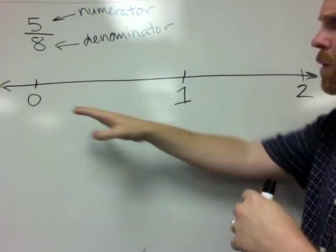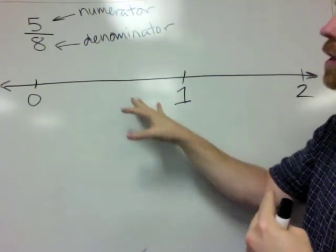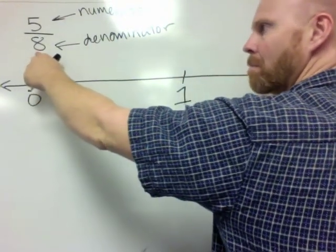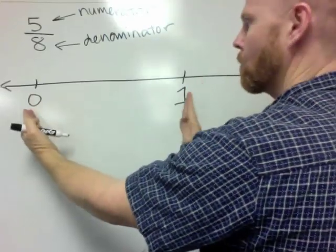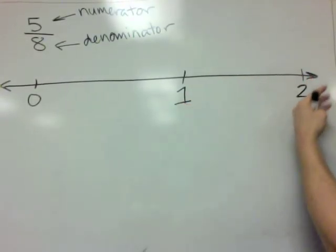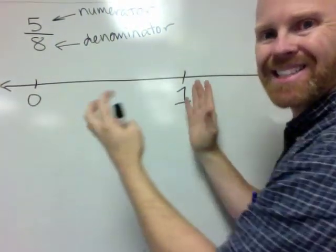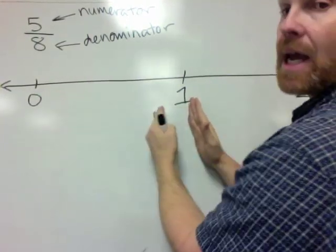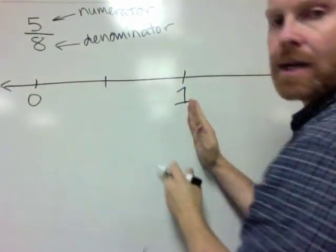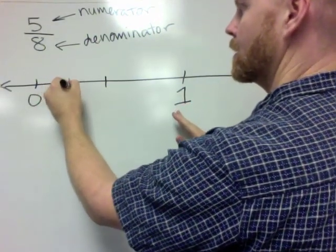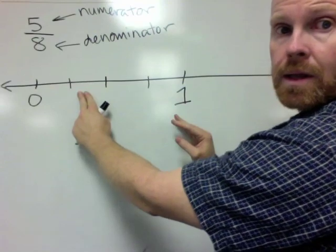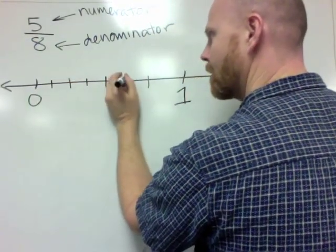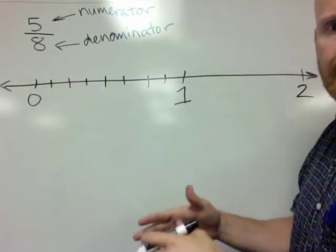Here's how you find out where this number lives on the number line. This 8 means each whole number, from 0 to 1 and from 1 to 2, each whole number is cut into 8 equal-sized pieces. So I'm going to cut it in half, and then cut each one of those in half. So now we have 4 equal-sized pieces. Now I'm going to cut each one of those in half, and now I have 8 equal-sized pieces.